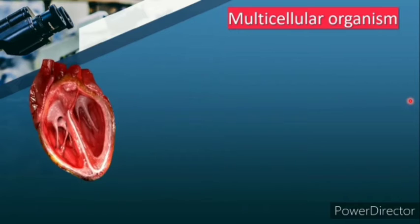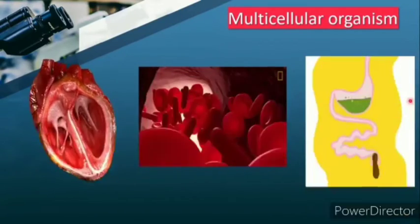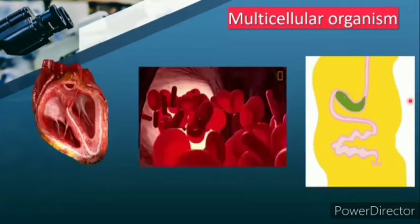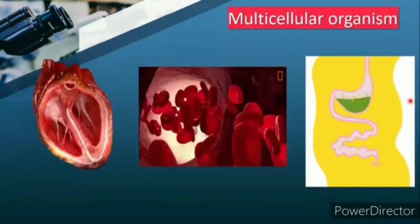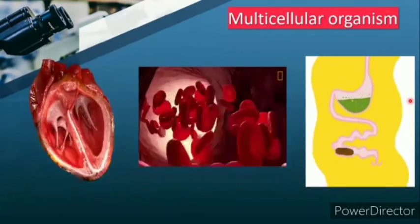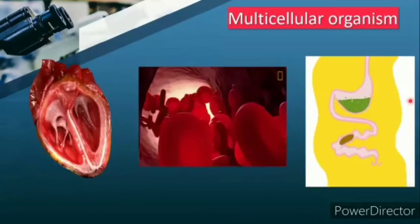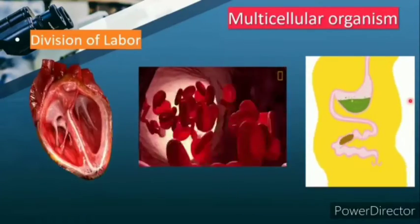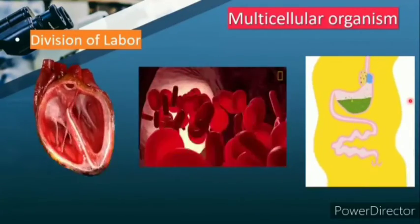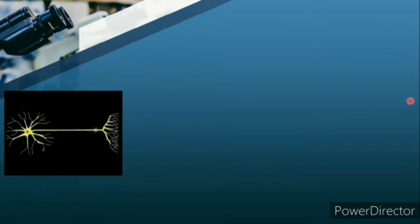Here you can see the pumping of the heart, the blood cells flowing, and the digestive system - various processes performed by different cells. That means there are groups of cells performing their own functions. This is known as the division of labor, where specific cells perform various specific functions.